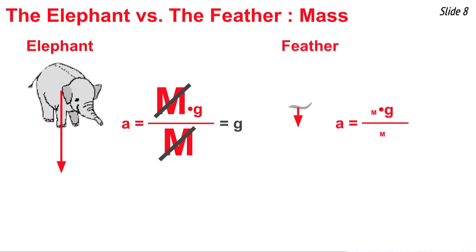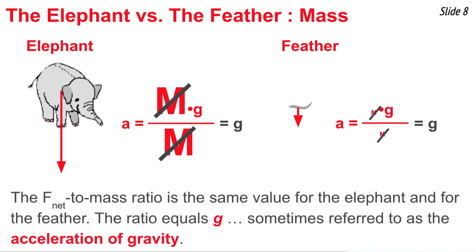When we do the same thing for the feather, despite its small net force, you're dividing that value by a very small mass. And when you do, you end up getting the value G again for the acceleration, the 9.8 meters per second squared.